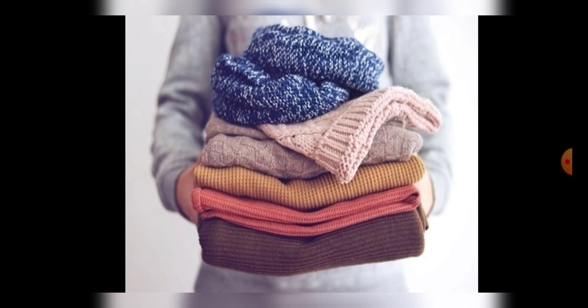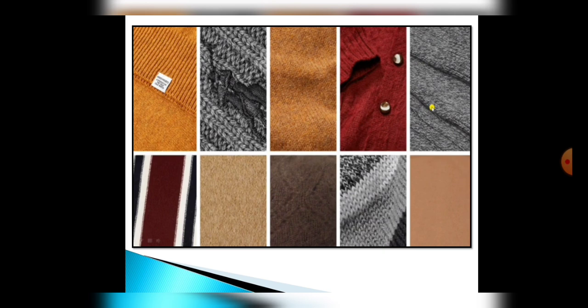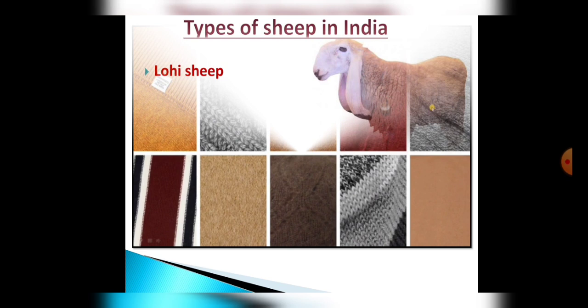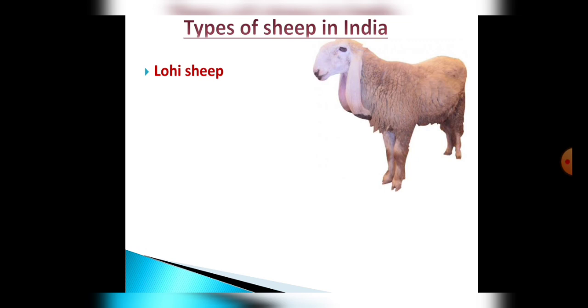Today we will talk about the animals which provide us wool. Students, look at this picture — these are different fabrics of wool, and these different varieties of wool we get from different types of sheep and animals. Firstly, we will talk about different sheep of India which provide us different types of wool.